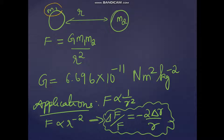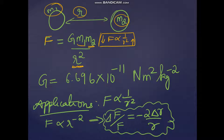Suppose there is a block of mass m1 and another block of mass m2 separated by a distance r. The force acting on the blocks is directly proportional to the product of the masses and inversely proportional to the square of the distance between them. So force is inversely proportional to r square — as distance increases, force decreases. G is the gravitational constant whose value is 6.674 × 10⁻¹¹ N·m² kg⁻².